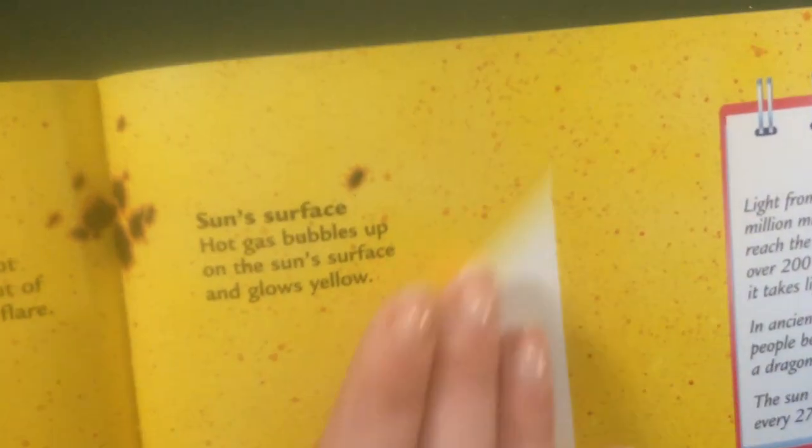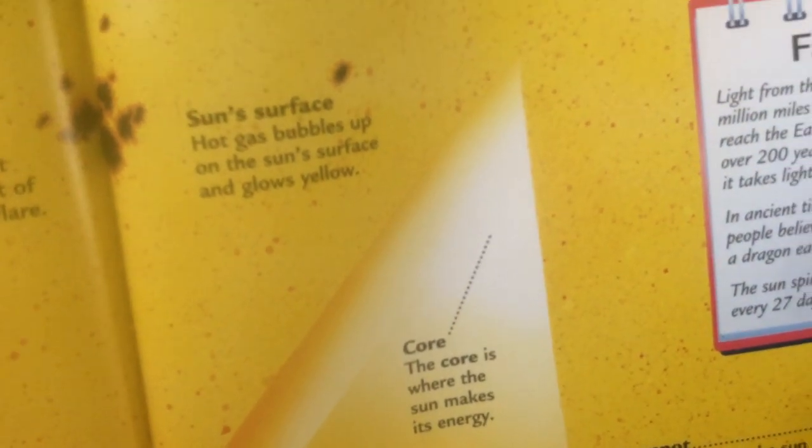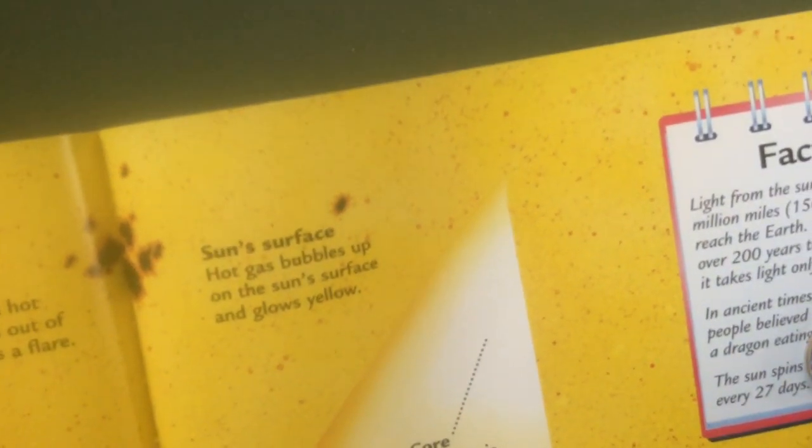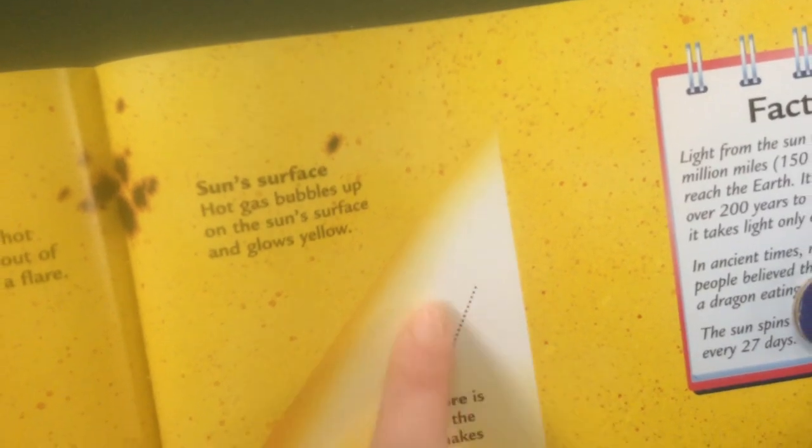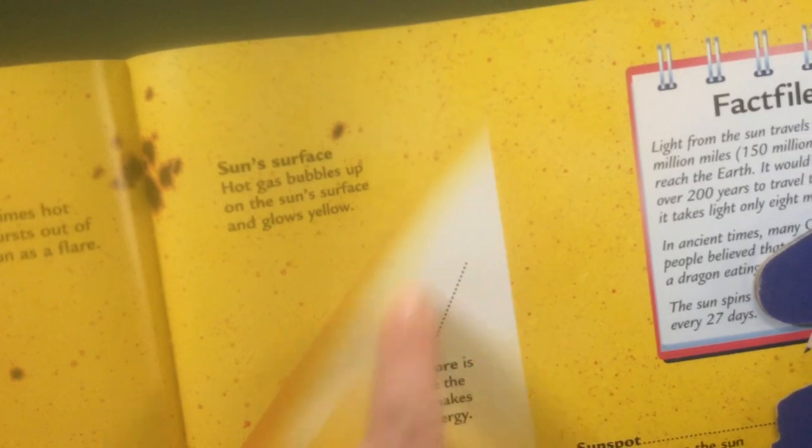And in the middle of the sun, if you cut the sun into a slice and you take a slice out of it, in the middle is the core. The core is where the sun makes its energy. All right, that's where it stirs up its energy.